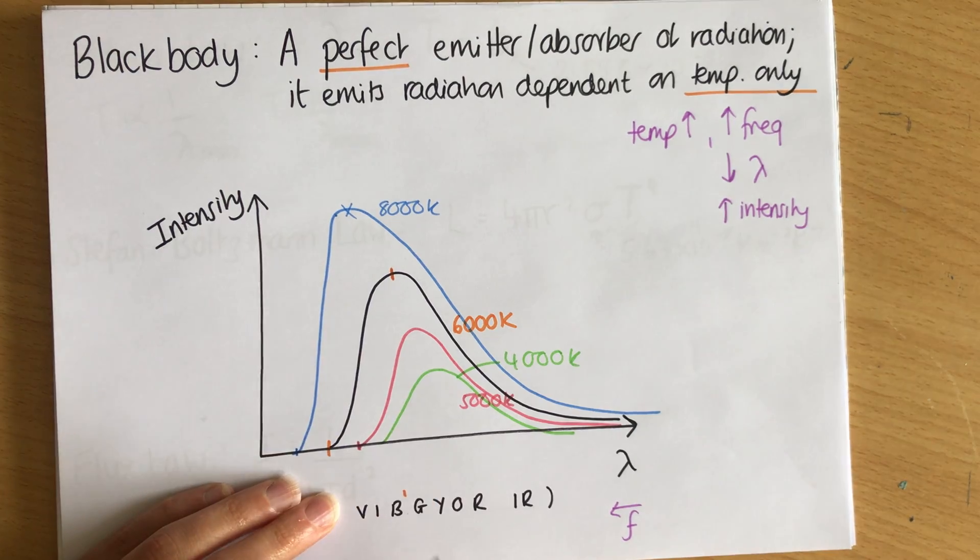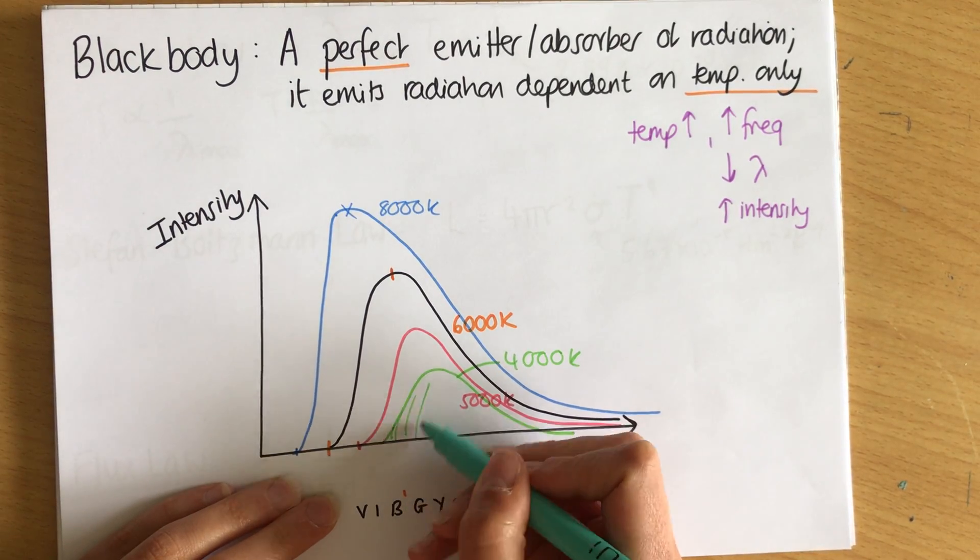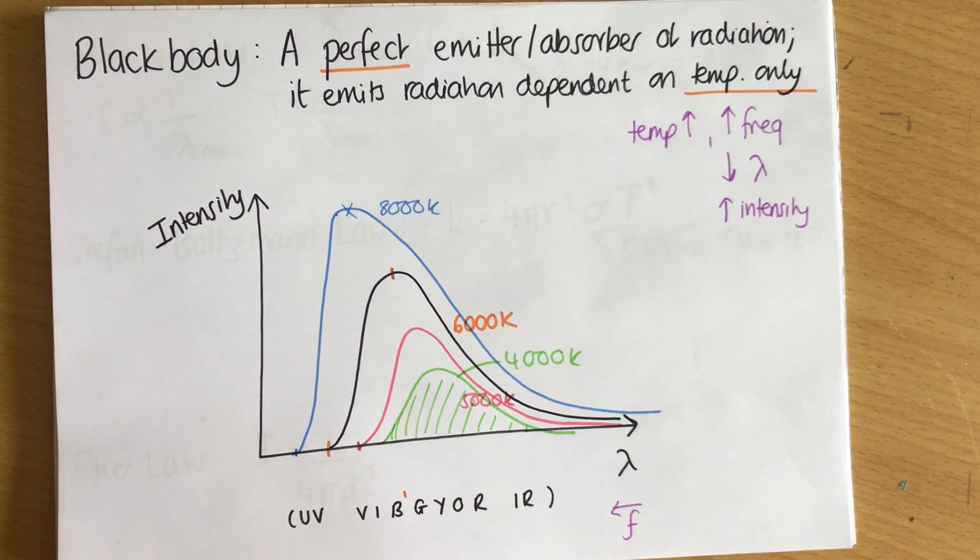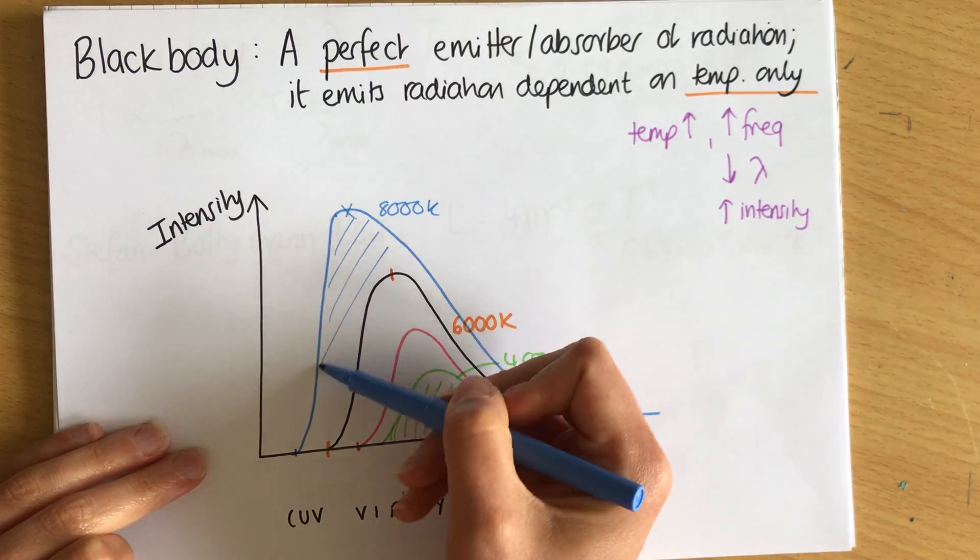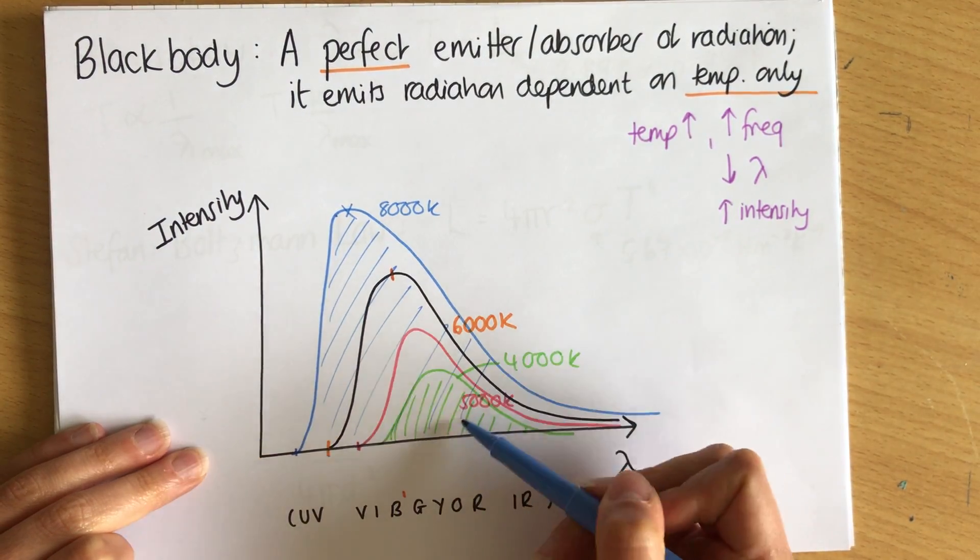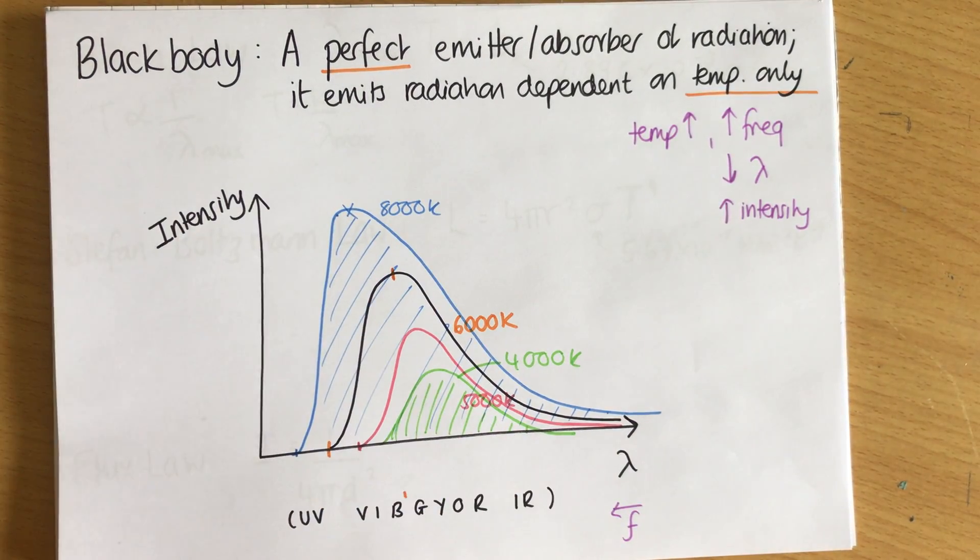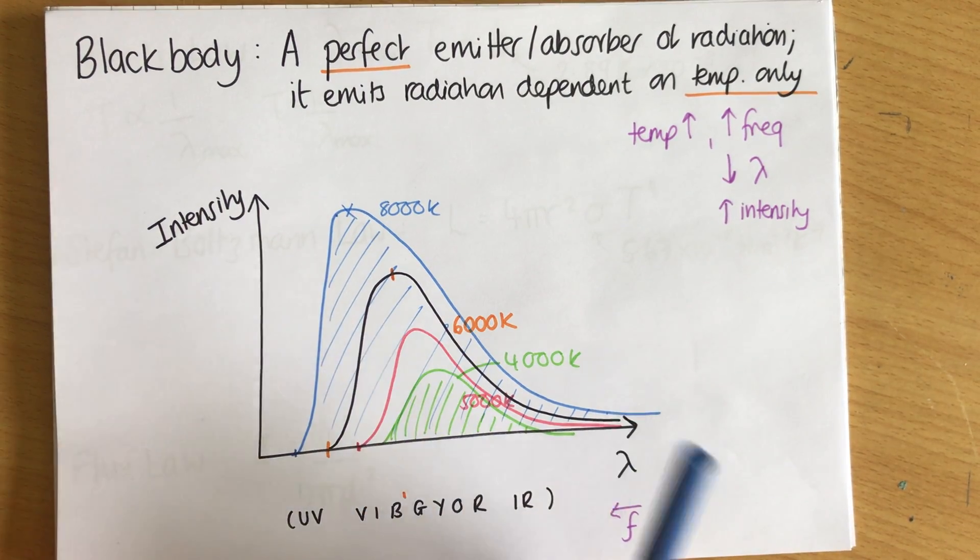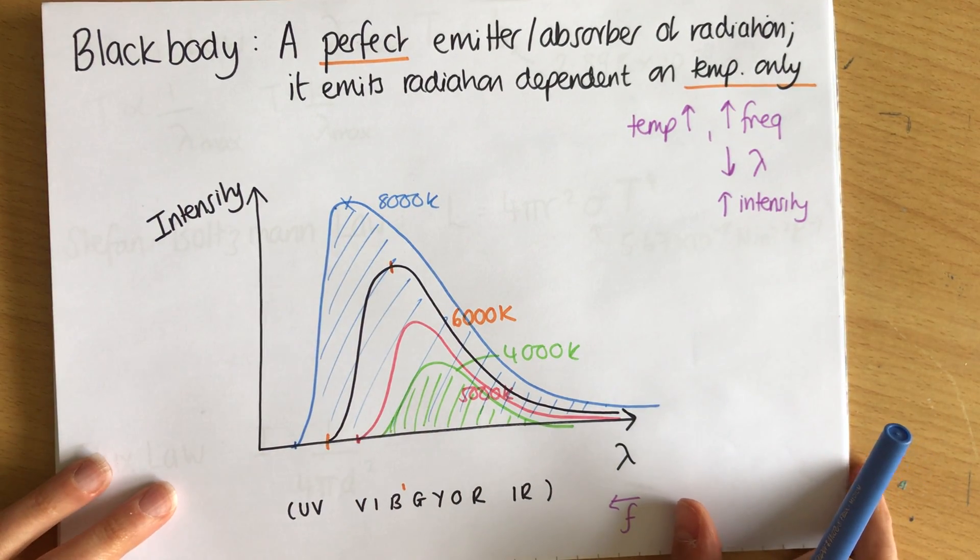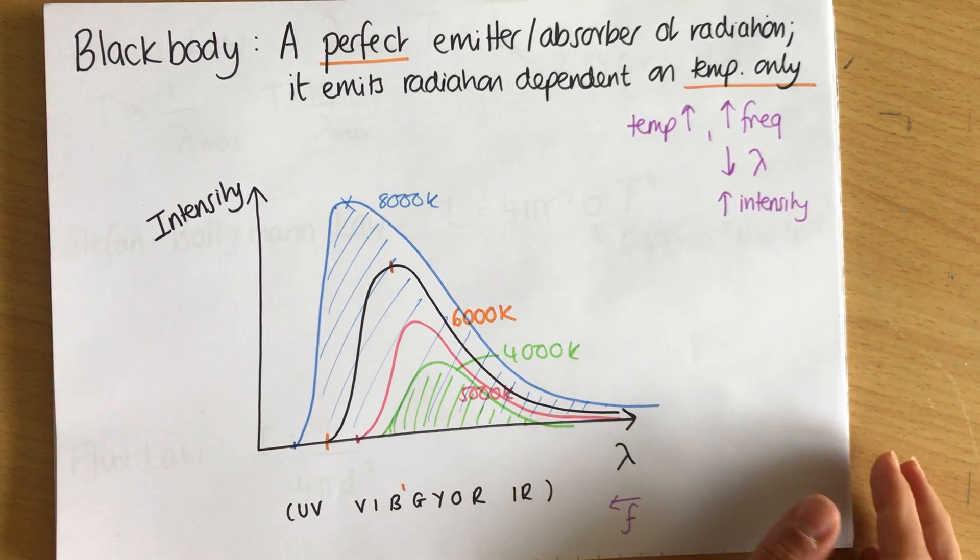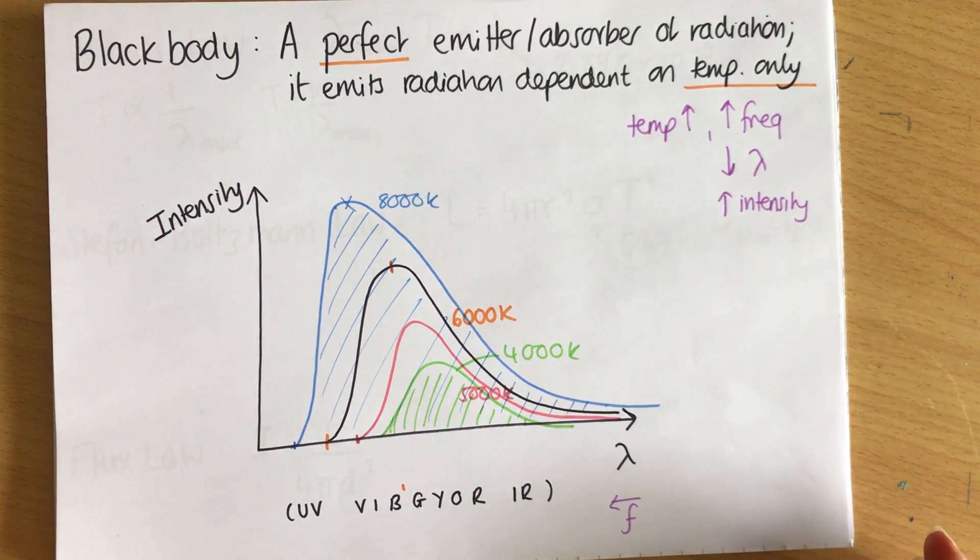And we're going to think about the area underneath the 4000 kelvin curve, which is this area here, compared to the area under the 8000 kelvin curve, which is this much, much, much bigger area here. Now from 4 to 8000, I have doubled the temperature, but it's hopefully really obvious that I've done much more than double the area.